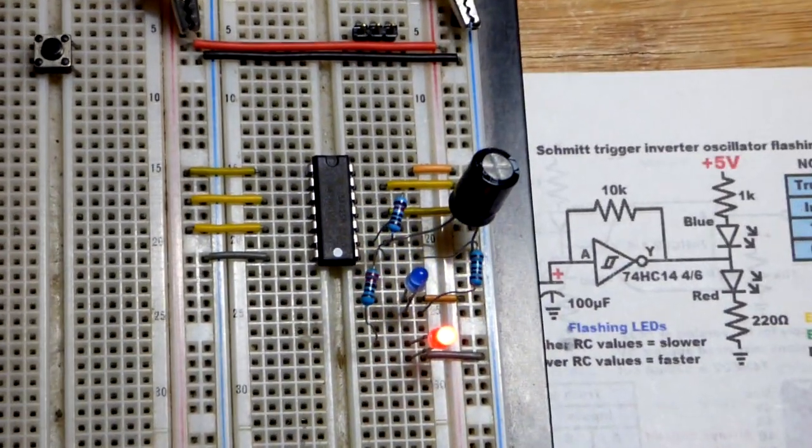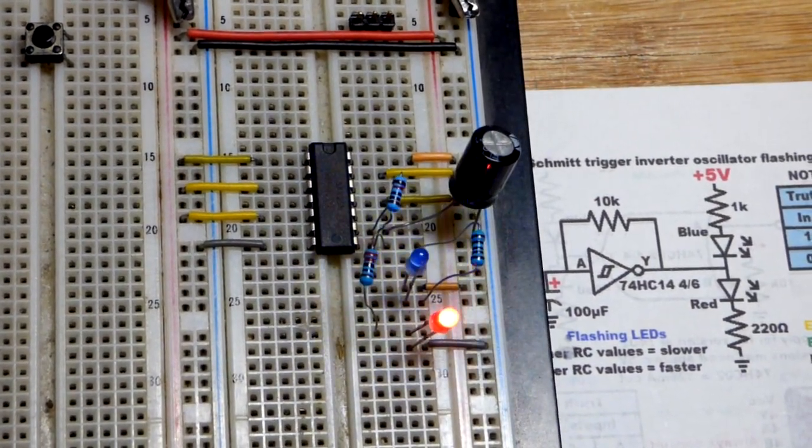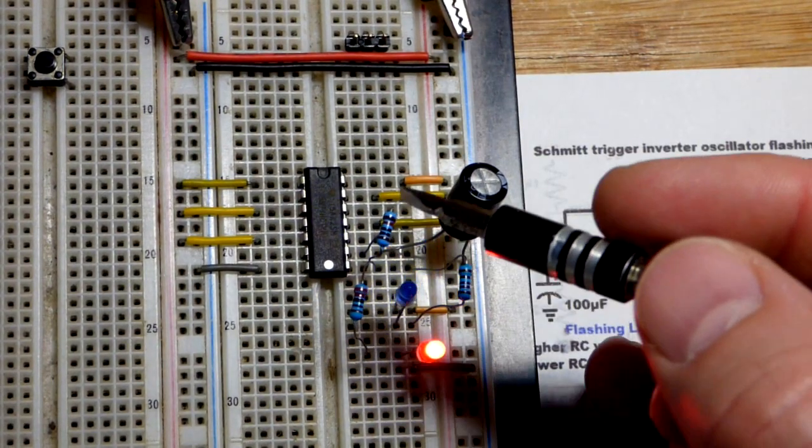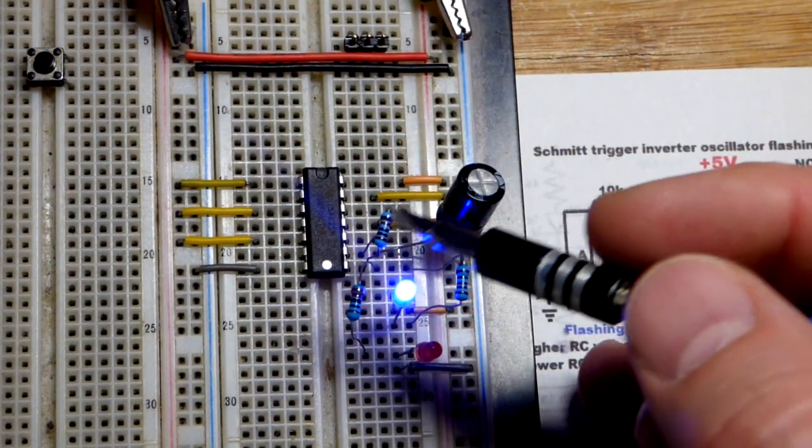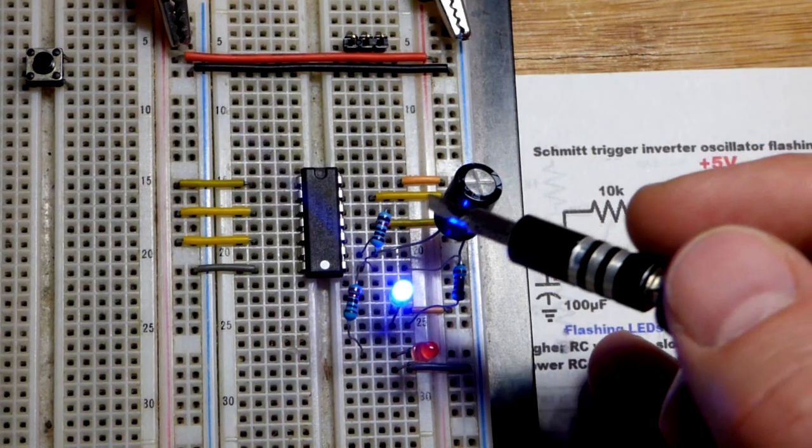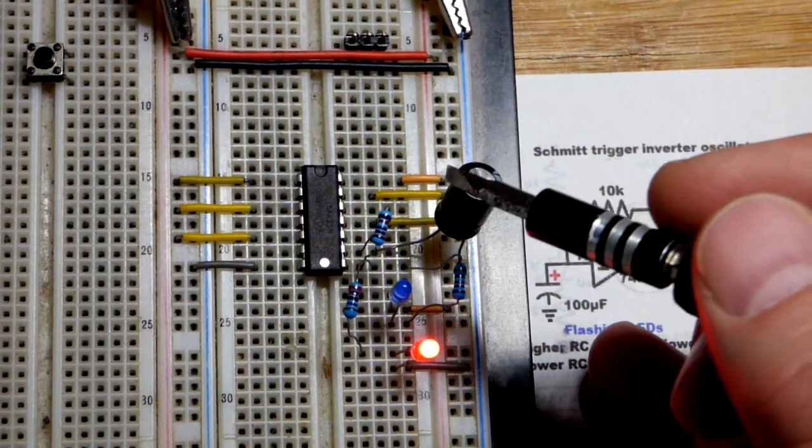So we have the output. The output is actually charging the capacitor when it sets the output high. When the capacitor gets a high enough voltage to the top of the hysteresis range, that flips the output low.